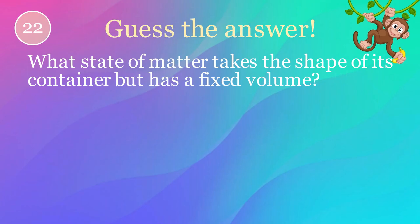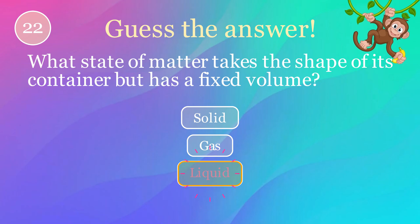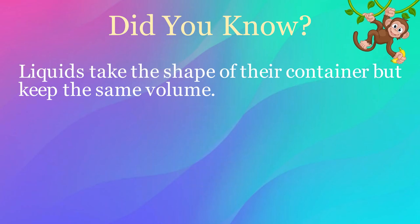What state of matter takes the shape of its container but has a fixed volume? Options: solid, gas, liquid. The correct answer is liquid. Here's an interesting fact: liquids take the shape of their container but keep the same volume.